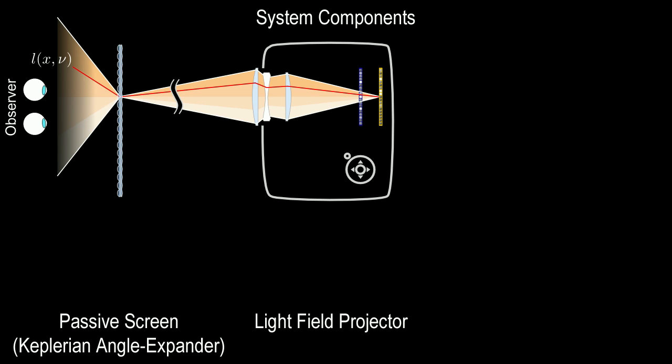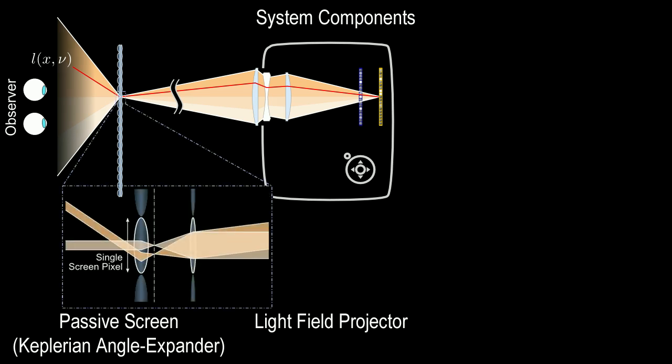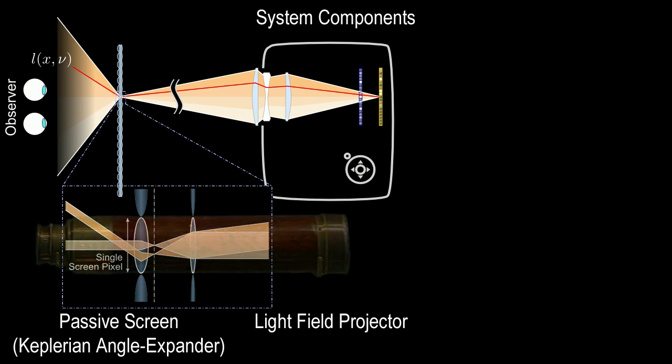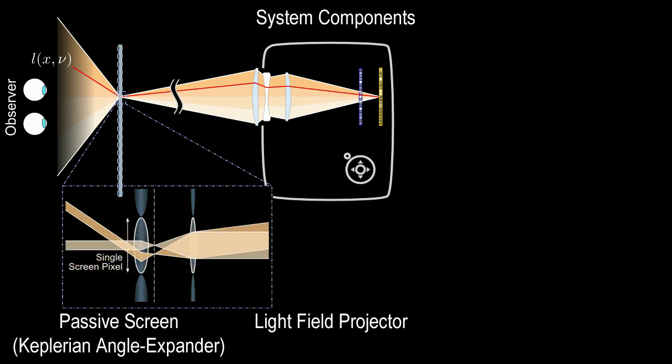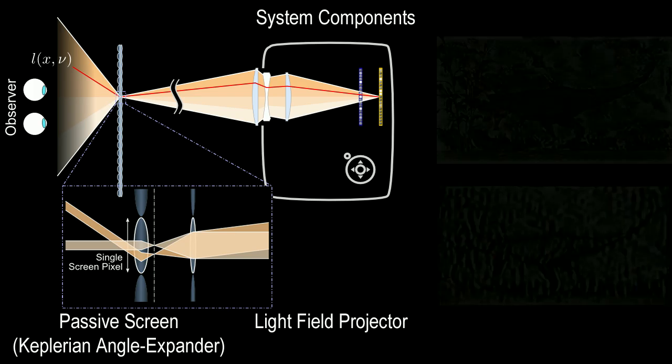This system comprises a light field projector and a passive angle-expanding screen. Angle expansion is a common technique in optics and has been used in Keplerian telescopes. Our screen consists of thousands of tiny telescopes, one for each pixel in the projected image. This allows an observer to freely move within a viewing zone on the other side of the screen.